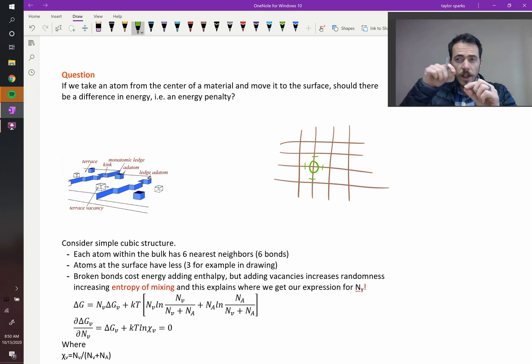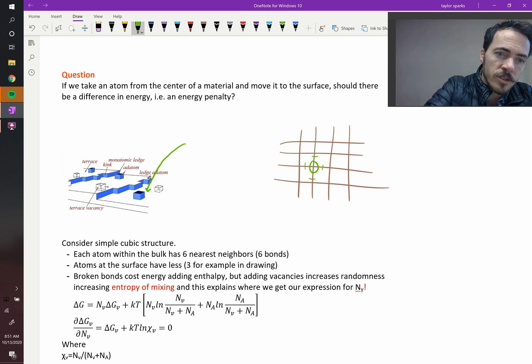So if you pull that out of the center, you had to break those six bonds. Now when you move it and put it on the surface, how many bonds will you form? That depends on what the surface looks like and where it goes on the surface. For example, is it going to go right here on a totally empty flat plane? Then it's only going to make one bond below it.